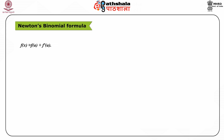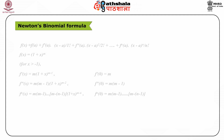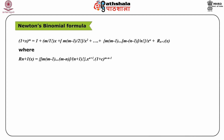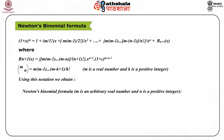Newton's binomial formula can be obtained using Taylor's formula. Applying Taylor's formula to f(x) equals (1+x) raised to the power m, where m is an arbitrary real number, we get for x greater than minus 1. Substituting into Taylor's formula and simplifying the notation, we obtain Newton's binomial formula, where m is an arbitrary real number and n is a positive integer.